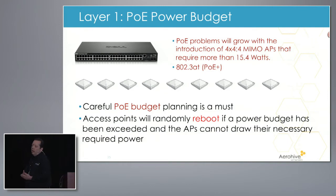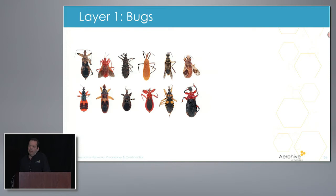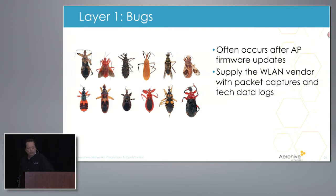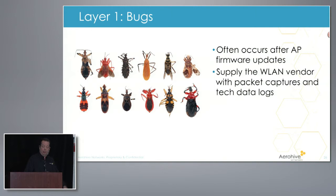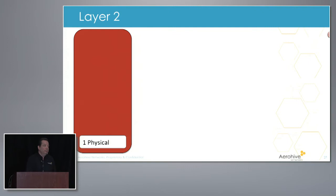Every vendor has bugs. Very often they occur after firmware updates — these are sometimes very hard to troubleshoot. Usually this is when you get your vendor's support team to help you out, and you're going to have to supply them with packet captures and tech data logs. When you get to layer two, after you can determine it's not a layer one problem — not a client issue, not a driver issue, not RF interference, not bad design — you can start moving up to layer two. The problems that can occur include roaming problems, layer two retries, and authentication and association problems.